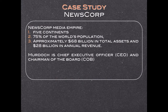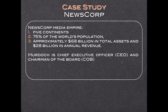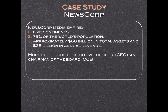The News Corp media empire spans across five continents, reaches approximately 75% of the world's population, and has approximately $68 billion in total assets and $8 to $9 billion in annual revenue, according to their most recent report. Currently, Murdoch serves as CEO and chairman of the board, and he and his family control approximately 39% of News Corp voting shares. If you find discrepancies with the data in the article, it's because I checked the most recent data online and updated it for this lecture.